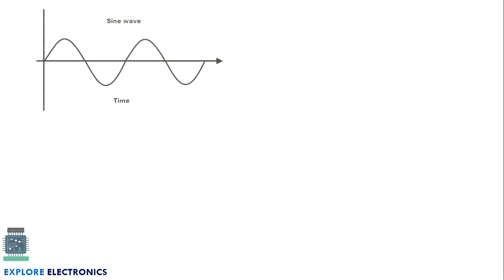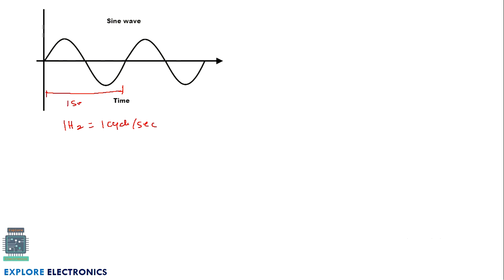Let us understand this. Suppose if this is my signal, it will have a frequency of 1 Hz. A 1 Hz signal means it will have 1 cycle per second. From here to here I am going to consider it as 1 cycle and it will take 1 second — this means a 1 Hz signal.